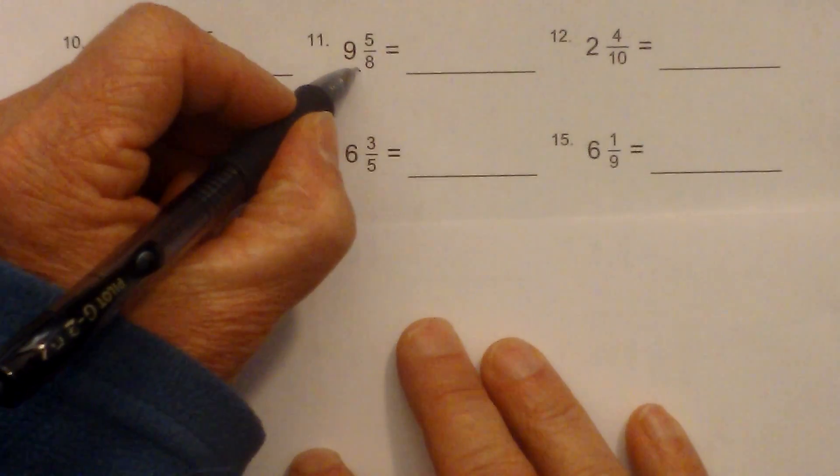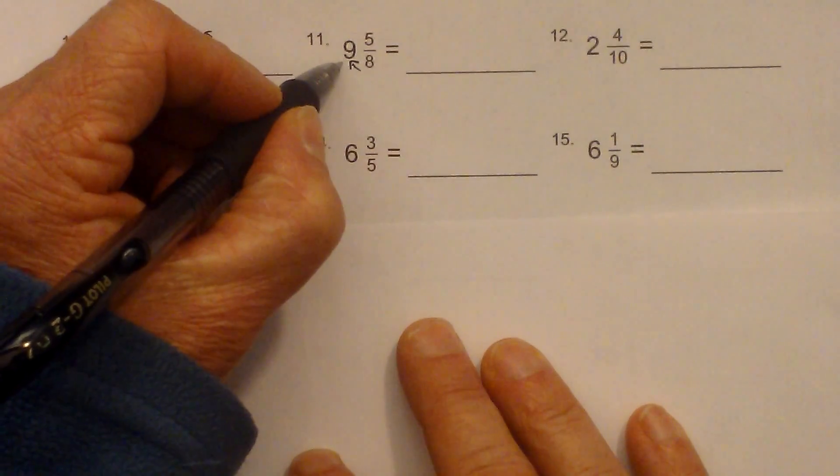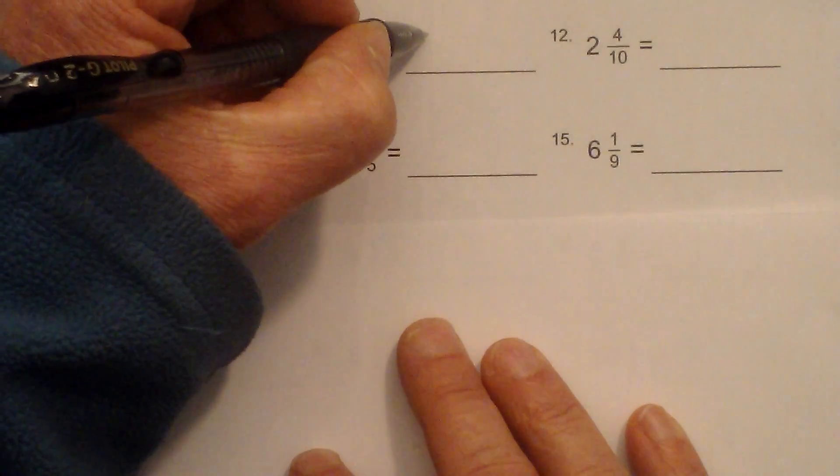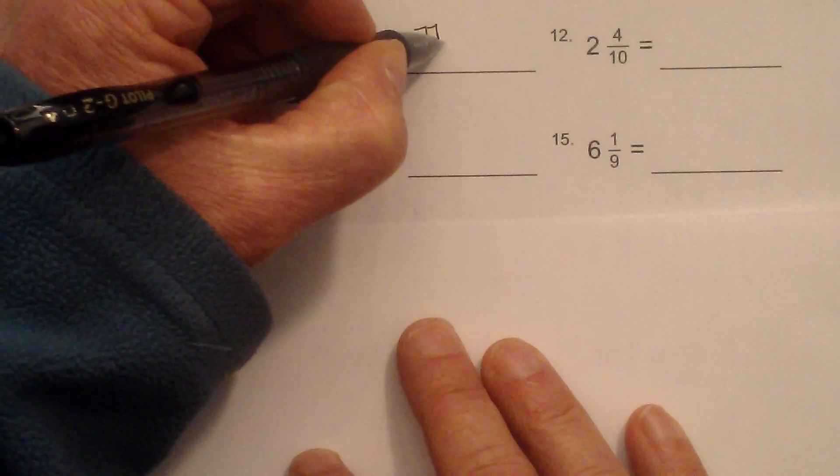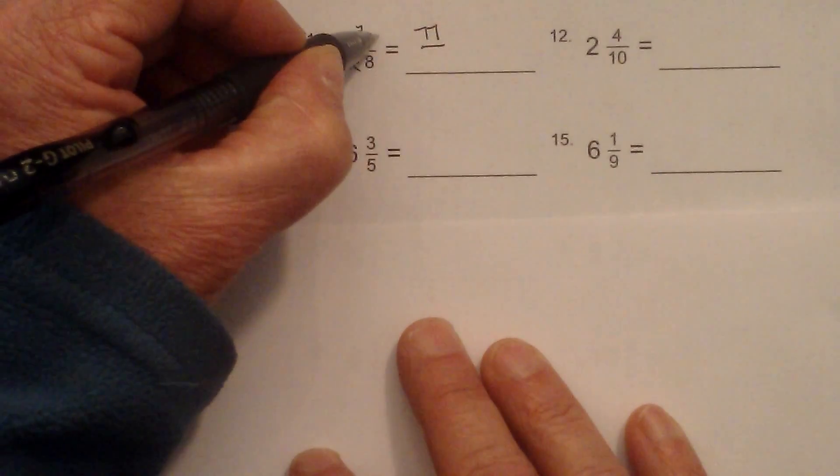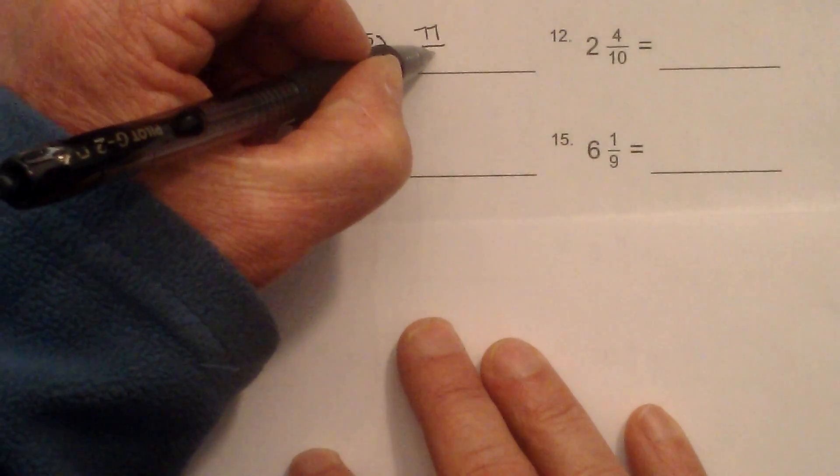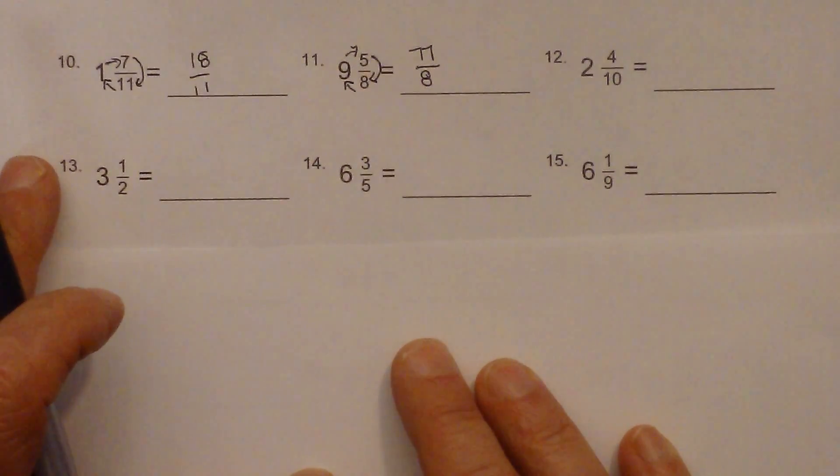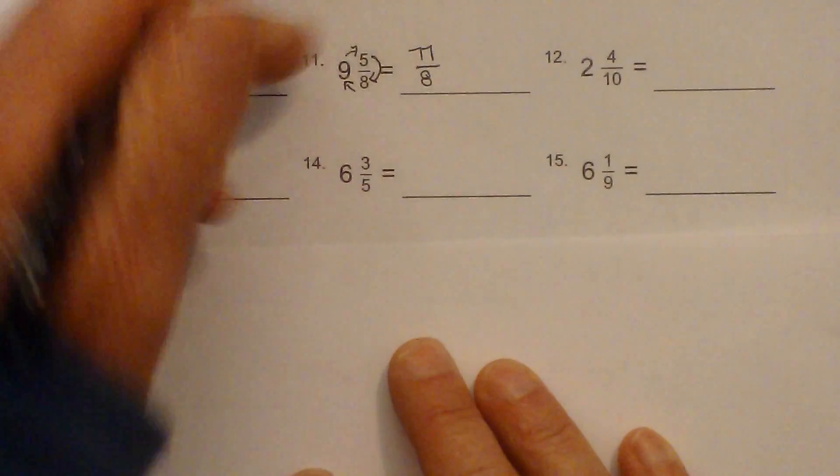Next, let's go in a circle. 8 times 9, remember you multiply first, is 72 plus 5 is 77. And the 8 continues around and goes back to its original spot. And again, we cannot reduce this particular one because 77 is prime.